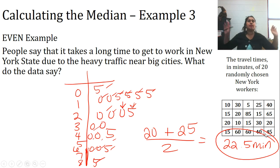So you can take the average. So I took the average and I got 22.5 minutes. So that would be the median of this even example. Again, odd, there were an odd number of samples, 15 people. Even, there are an even number of samples, 20 New Yorkers. So that's what we mean by that.